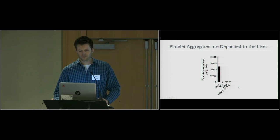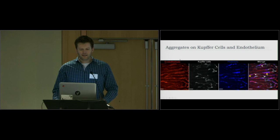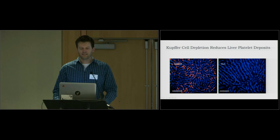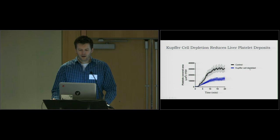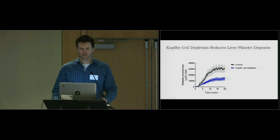Zooming in on the liver and staining for endothelium, Kupffer cells, and platelets, we see that the aggregates adhere to two things: either to the endothelium or to Kupffer cells. If we deplete Kupffer cells by injection of clodronate liposomes, all Kupffer cells are gone. Looking at platelet aggregation and liver deposition in those mice, we see about a 50% reduction — in line with our earlier observation that platelets can also adhere to the endothelium.